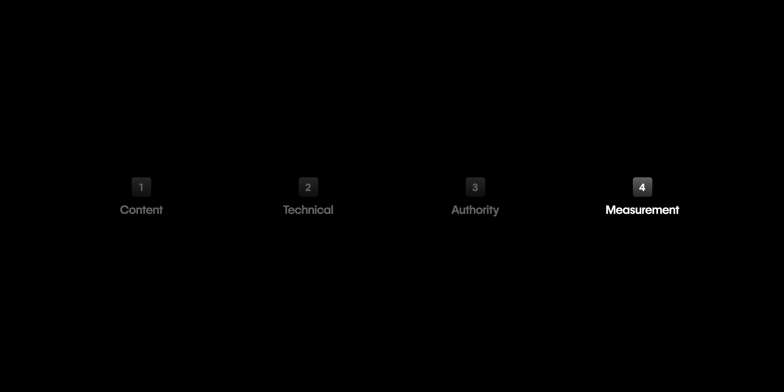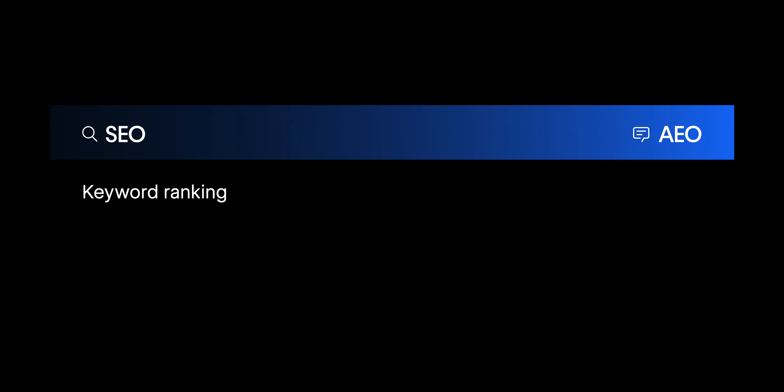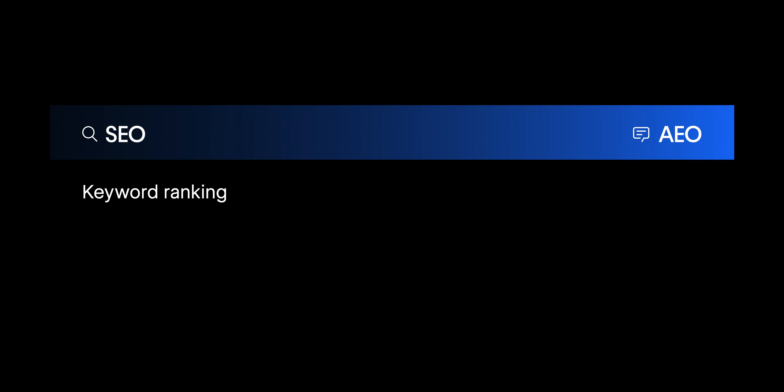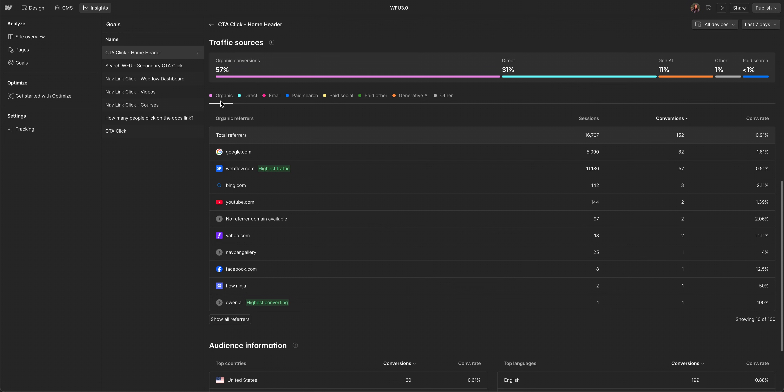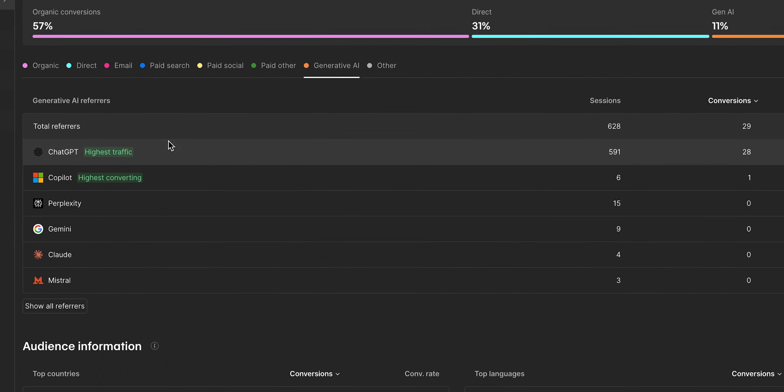Lastly, let's talk about measurement. In AEO, what you measure changes. The whole concept of keyword rankings goes away for AEO because the response isn't a ranked list of your words, but rather content rewritten into paragraphs by AI. So for AEO, you want to track mentions, share of voice, and sentiment of LLM responses. Start by monitoring the traffic AI search sends to your site and how well that traffic converts. Then evolve your strategy to measuring how often your brand appears in AI-generated answers to the questions you care about — and you typically do that using a third-party tool.